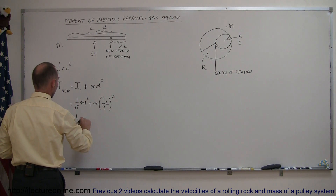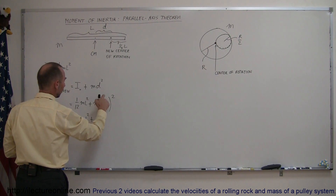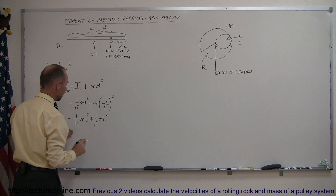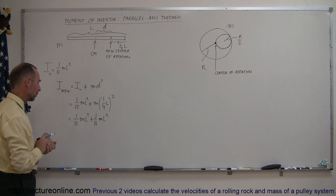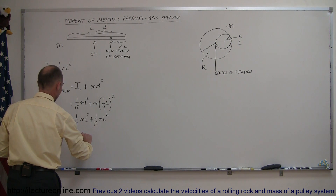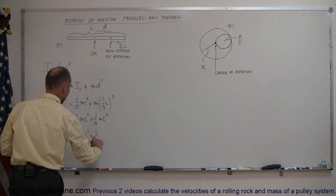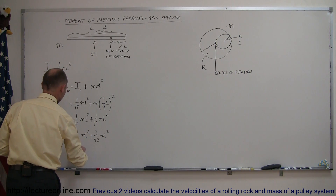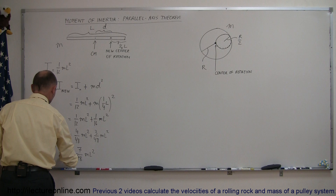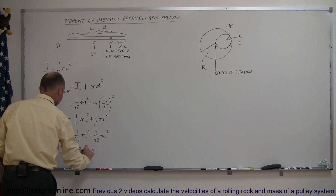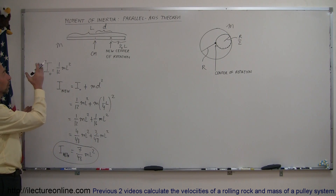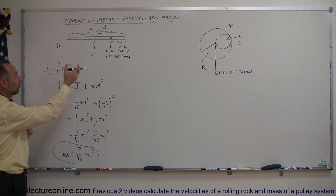So this is equal to 1/12 mL squared, plus 1/4 squared, which would be 1/16 mL squared. If we combine those, we need to find the common denominator, which is 48. So this can be written as 4/48 mL squared plus 3/48 mL squared, which equals 7/48 mL squared — definitely a greater moment of inertia by moving it to a point other than its center of mass. That's how you find the moment of inertia of a bar rotating at a point different than its center of mass.